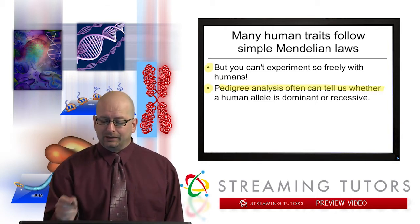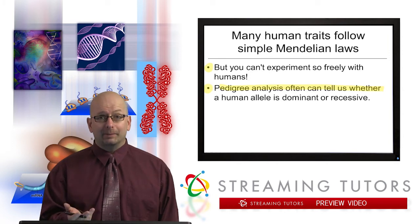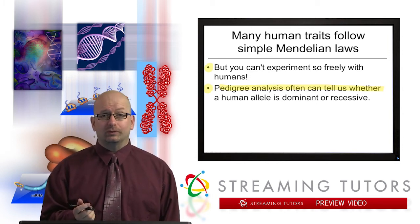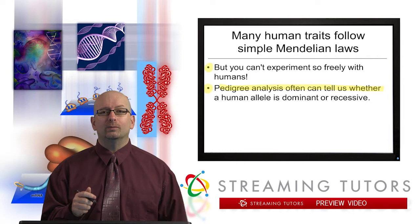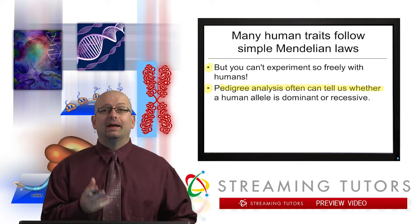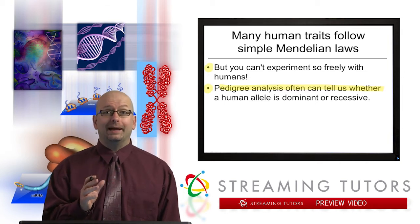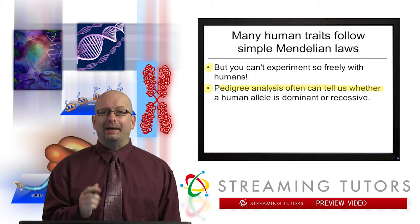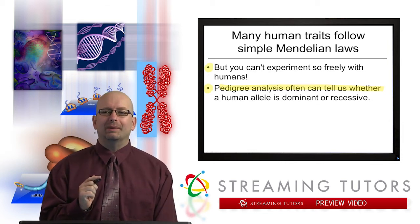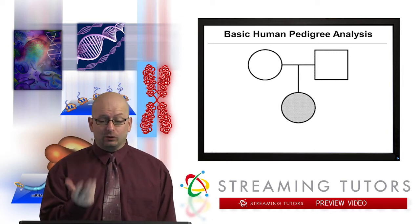Based on these diagrams and this evidence we can try to deduce how a human trait is inherited. Pedigree analysis can often tell us one of the major things we're interested in: whether a human allele is inherited in a dominant fashion or in a recessive fashion. That's what we're going to devote this analysis to. Just don't panic when we get to some of the more complicated looking pedigrees — sometimes it's not as bad as you might think.